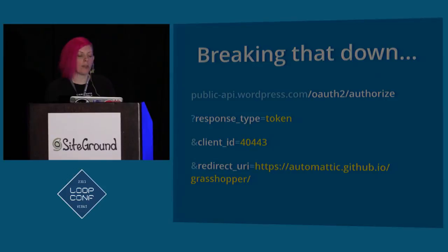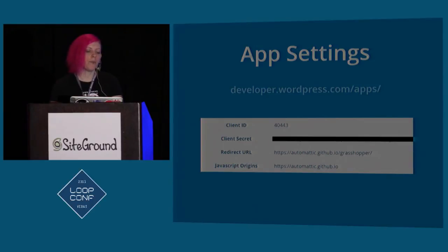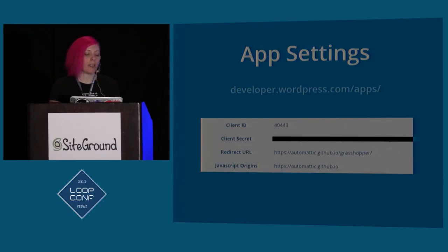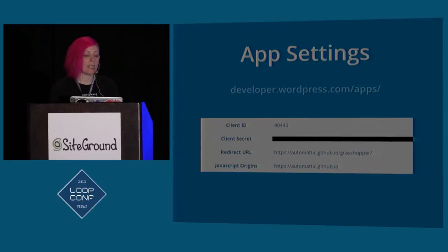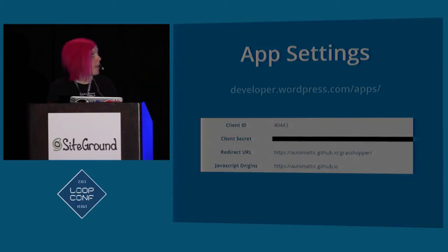The client ID and the redirect URI come from your application settings on developer.wordpress.com. You need to create an app there basically just to mediate between your code and our API, and when you do that we'll give you a client ID and a client secret. The redirect URL — for our purposes we're just redirecting back to the homepage, but it could be a different page on your site. The redirect URL needs to process the token you're going to receive when authentication succeeds, and also handle the error if a user denies the authentication. The JavaScript origins is what I was referring to with implicit authentication — it's basically just a whitelist where you can say these URLs are trusted, so if you get a request from them it's okay to redirect back without having a client secret.